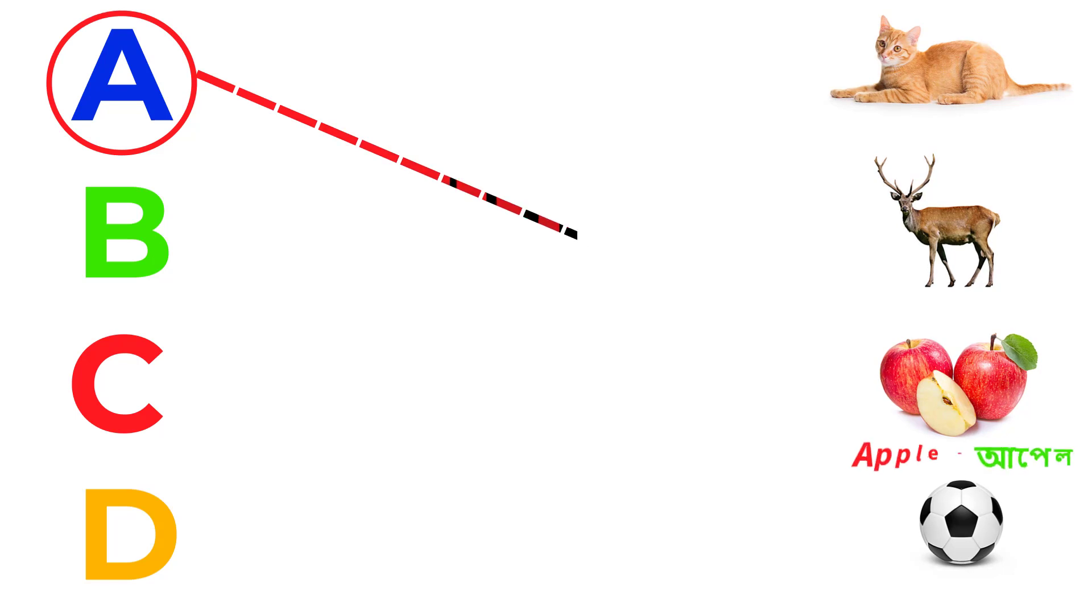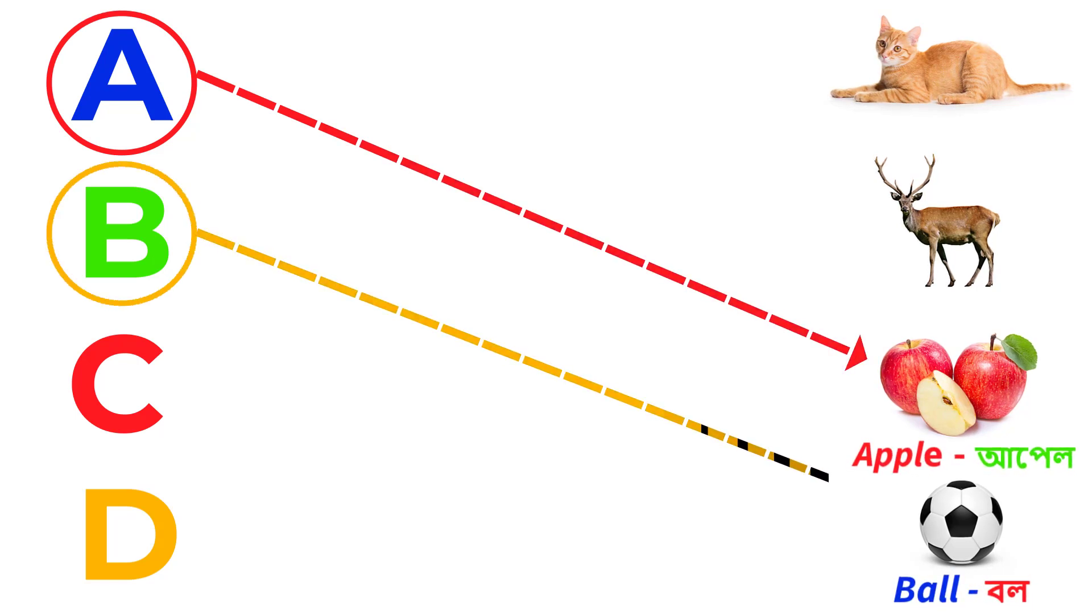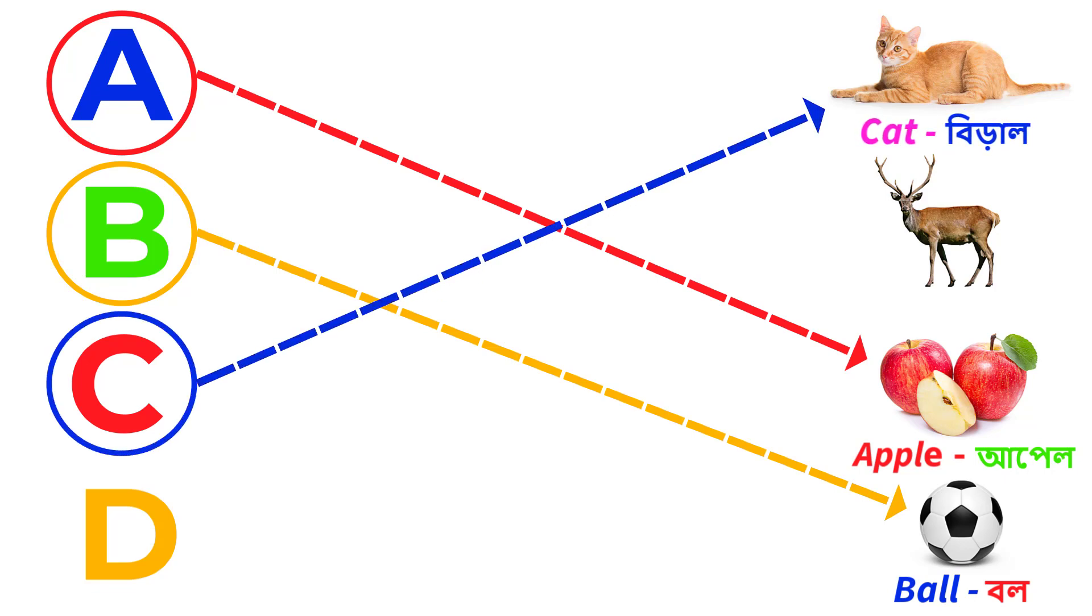A for apple, B for ball, C for cat, D for deer.